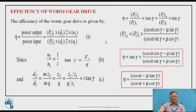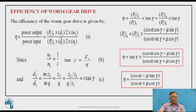As mentioned, frictional losses are quite heavy in worm gear drives, so efficiency is comparatively less than other gear drives. Mechanical efficiency is power output divided by power input. In worm gear drives, output is taken from the worm wheel and input is supplied to the worm. Power is torque multiplied by angular speed, and torque equals tangential load multiplied by radius. So power output is the tangential force on the worm wheel multiplied by pitch radius of the worm wheel and its speed, where angular speed 2*pi*n/60 terms cancel out.